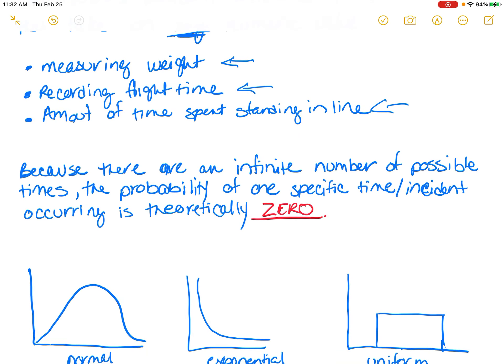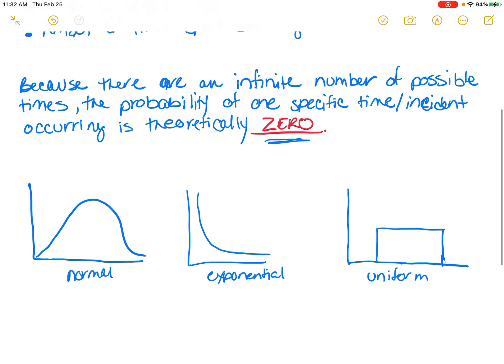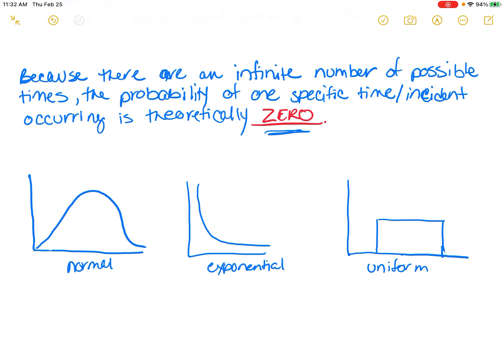Because there are an infinite number of possible values, the probability of one specific time or incident occurring is theoretically zero. So for a continuous probability distribution, if I were to say the probability of X being exactly equal to whatever, that would be zero in this particular situation.